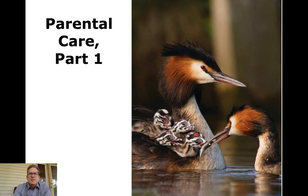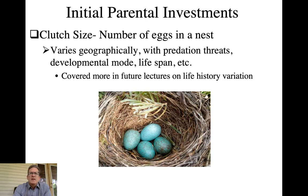Today's lecture is going to be a two-part investigation of parental care. One of the initial parental investments seen in birds is determining how many eggs are going to be laid. This is called the clutch size — the number of eggs put into a nesting attempt. This can vary within a species geographically, and we'll talk about some geographic trends associated with that.